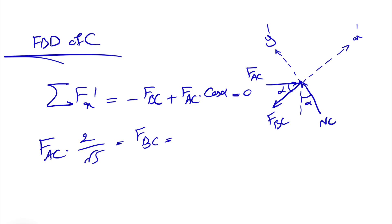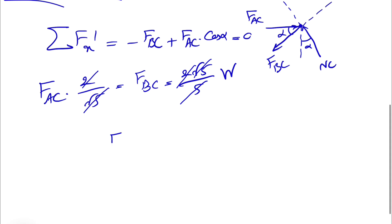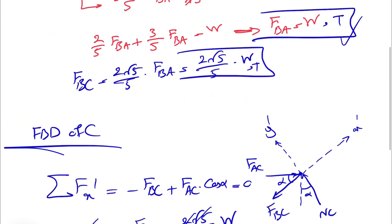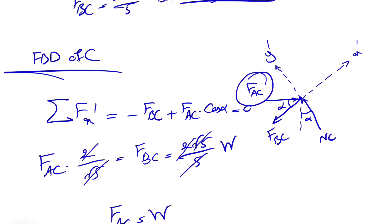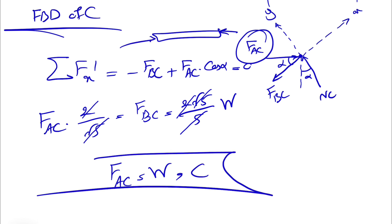Substituting FBC = (2√5/5)W, we get FAC times (2/√5) = (2√5/5)W. The 2's cancel and so do the √5 terms, giving FAC = W. Since there is no negative sign, the direction we assumed for FAC was correct. However, since this is the force from the member on the joint, the member itself acts in the opposite direction — so member AC is in compression.